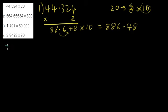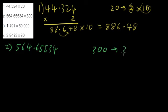Okay, now let's have a look at number 2. So we have 564.65534 and we're going to take that and we're wanting to multiply it by 300. Now 300 is 3 times 100. So we can multiply this by 3 and then we can multiply our answer by 100.